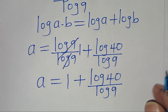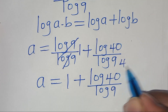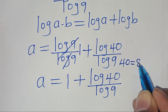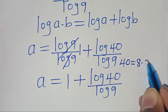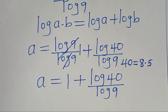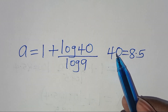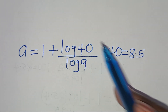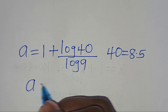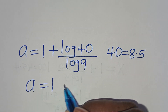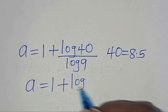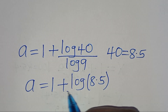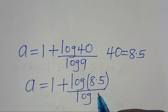The next step is that we can express 40 basically as 8 multiplied by 5. Now we can express 40 as 8 times 5, so let's substitute here, so that a is equal to 1 plus log(8 times 5) divided by log 9.